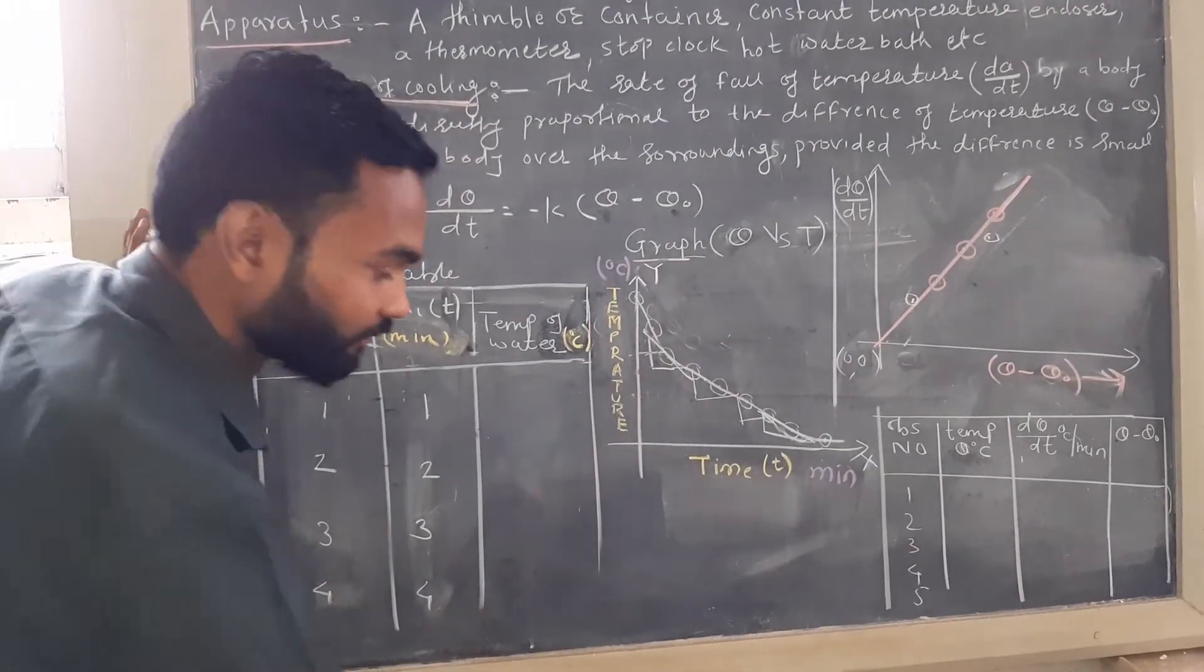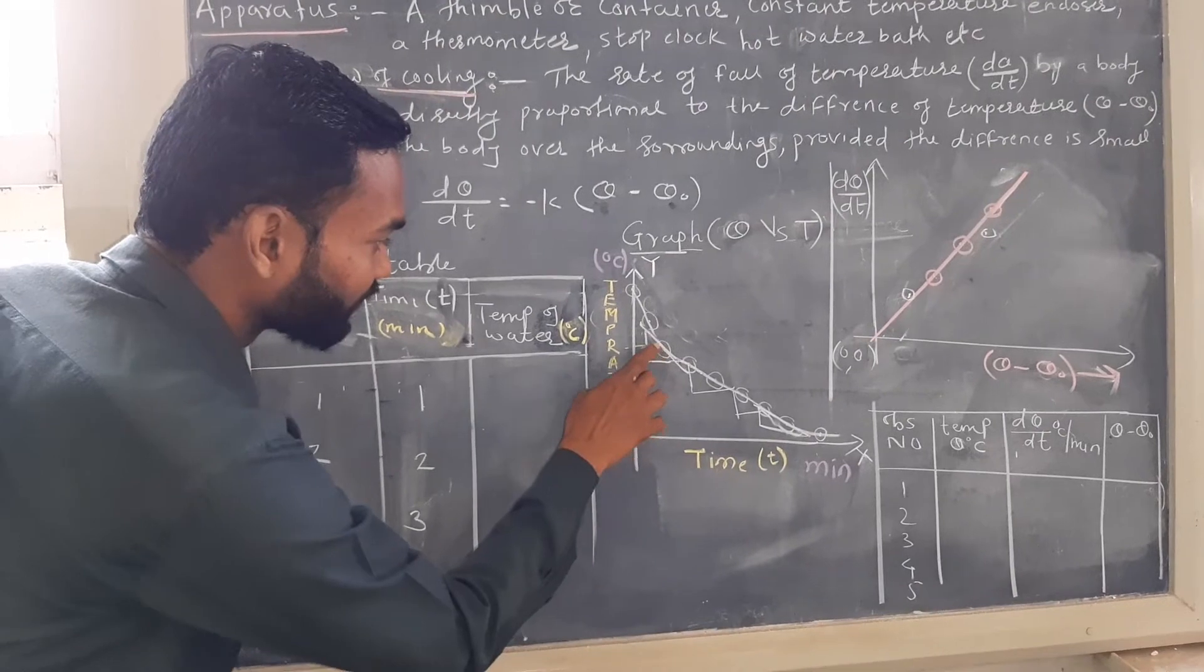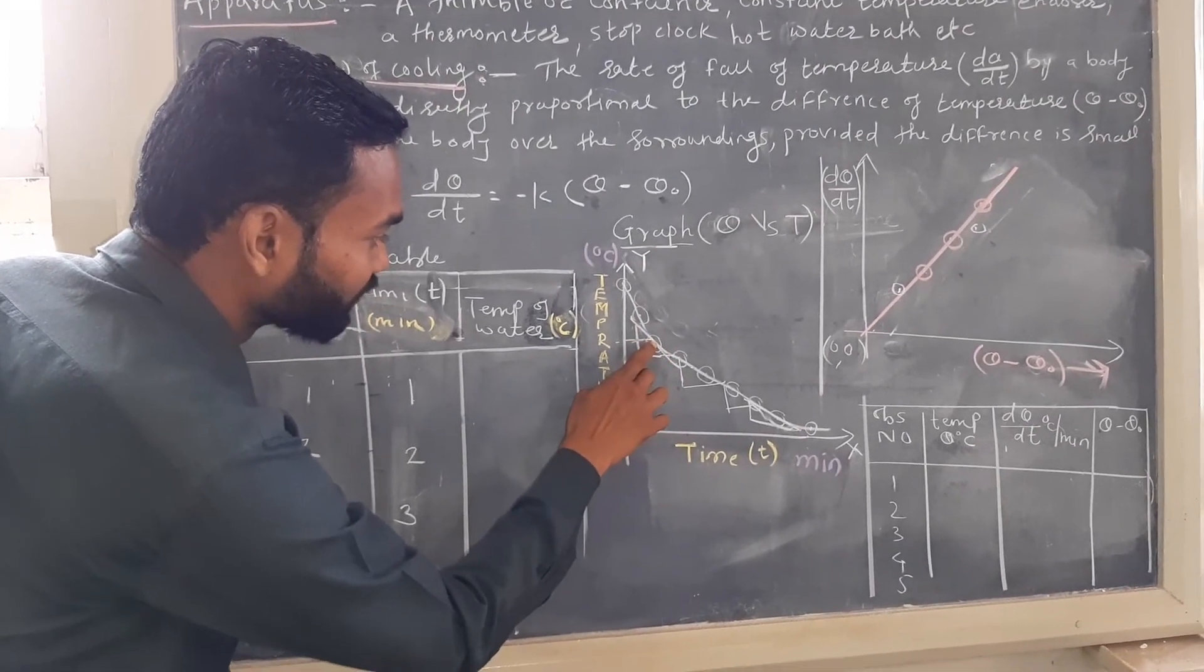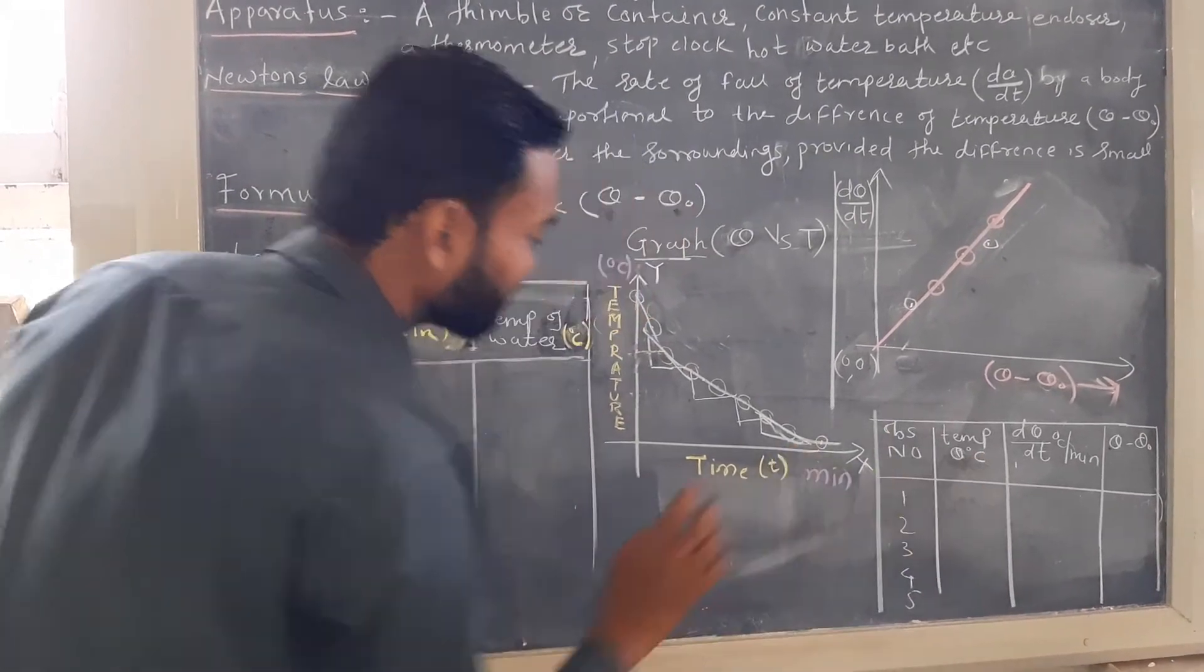Now here the point at that particular point we draw a tangent. So this particular point is nothing but θ, θ degree Celsius.